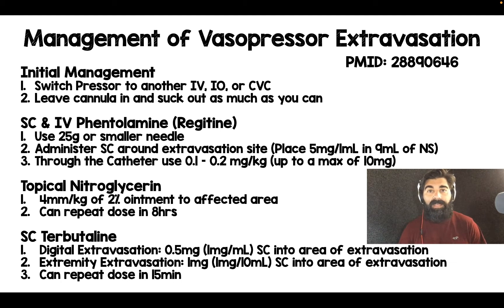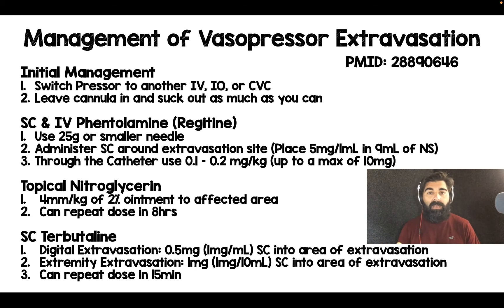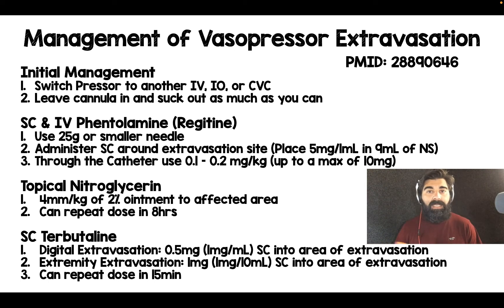Often I find I'm moving on to one of two options after that: either sub-Q and IV phentolamine, or sub-Q terbutaline. For phentolamine, it typically comes in five milligrams per ml. You take that one ml — five milligrams — mix it with nine ml of saline, then give it through the catheter at 0.1 to 0.2 milligrams per kilogram, up to a max of 10 milligrams. You can also inject subcutaneously around the site, using a 25 gauge needle or smaller to minimize volume.